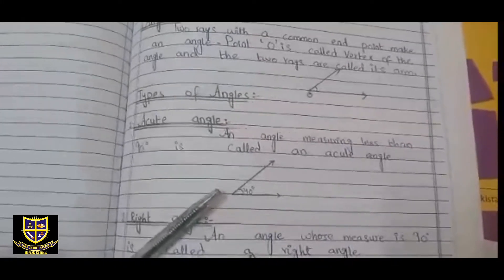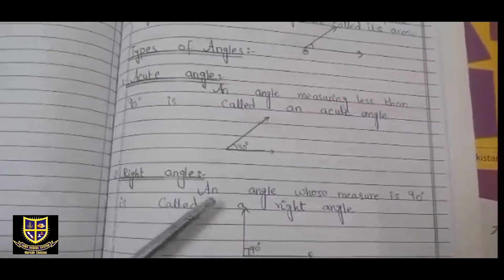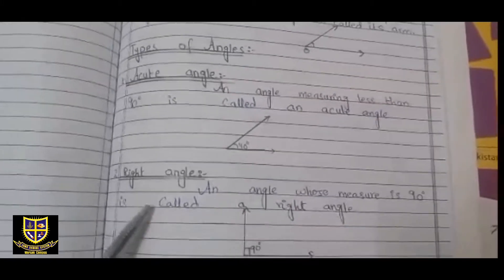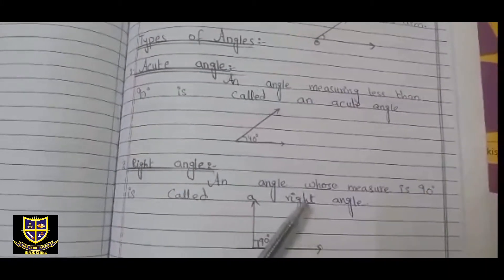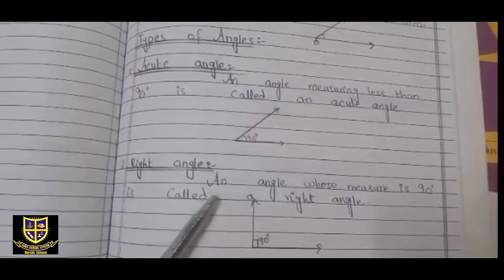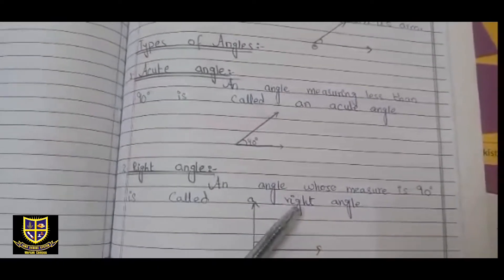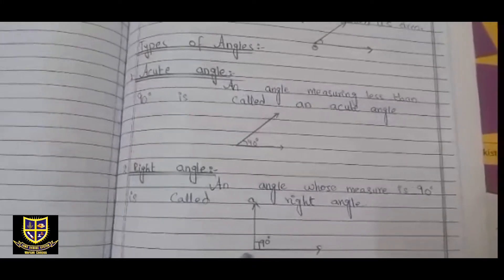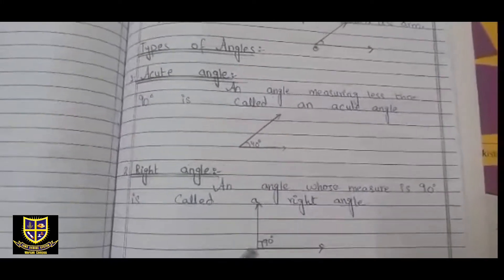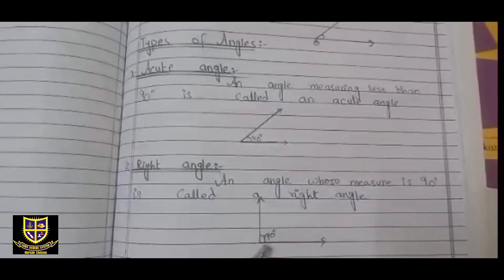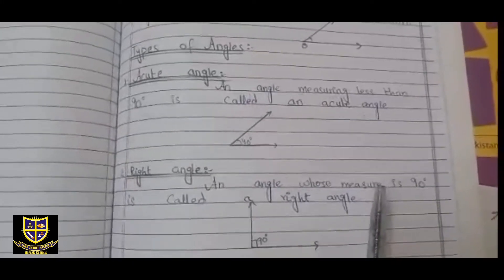An angle whose measure is 90 degrees is called a right angle. Jis angle ki measuring humare paas 90 degree ke equal ho, woh humare paas right angle hota hai. Jaise right angle mein humare paas straight line hoti hai — yeh humare paas 90 degree ka angle hai, jisko hum right angle kehte hain.